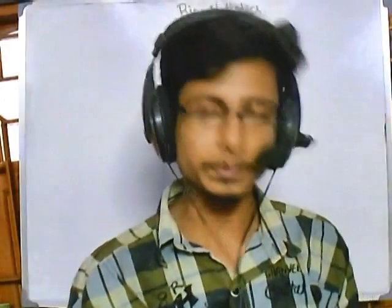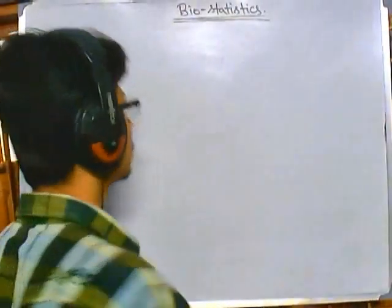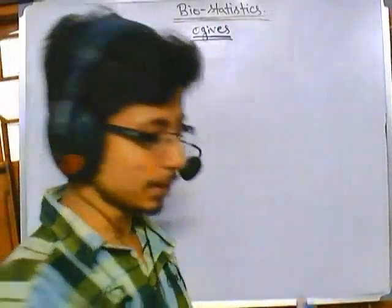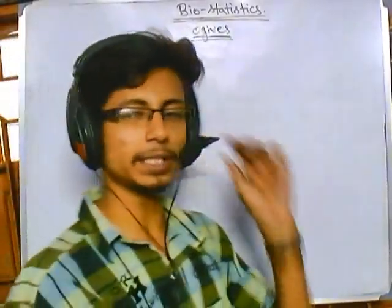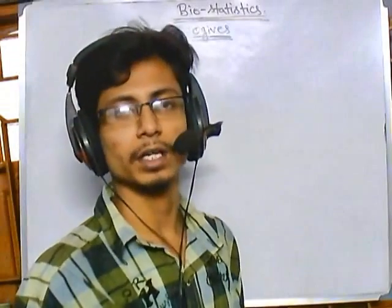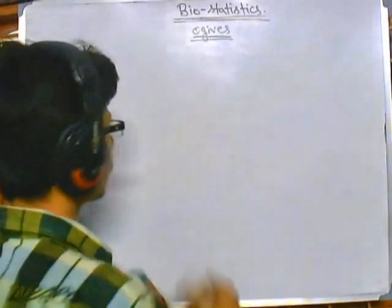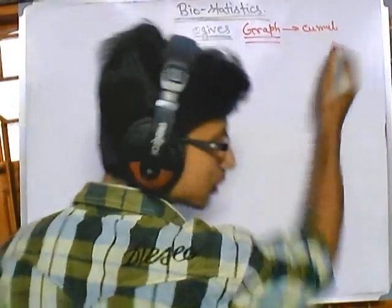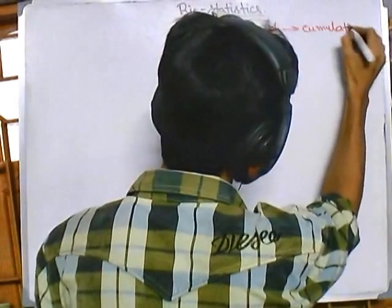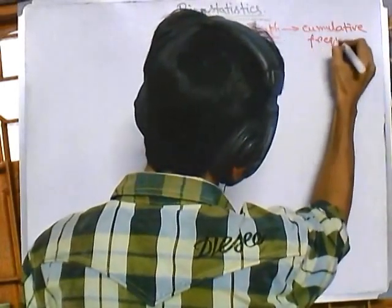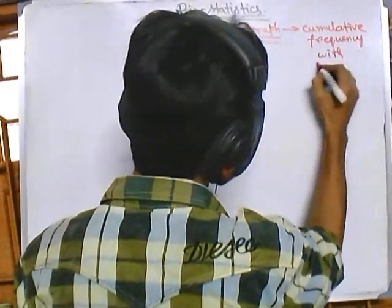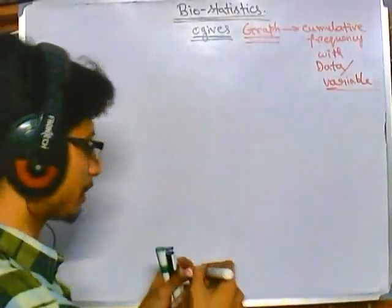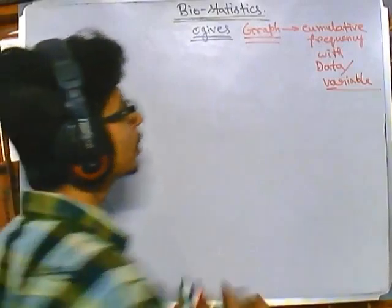We are talking about basic biostatistics concepts. In this video, I am going to talk about ogives. Ogives are simply a graphical representation of a variable with cumulative frequency — a graphical representation of cumulative frequency with the data or variable.